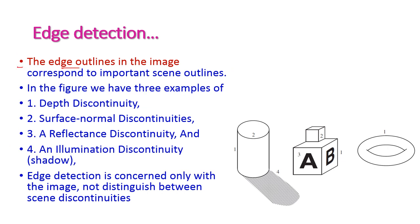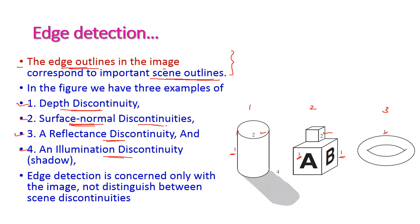The edge outlines of the image correspond to important scene outlines. There are different examples: depth discontinuity, surface normal discontinuities — where the surface will not appear normal — reflectance discontinuity, and illumination discontinuity, where illumination discontinuity forms shadows. Edge detection is concerned only with the images, not with the entire scene.